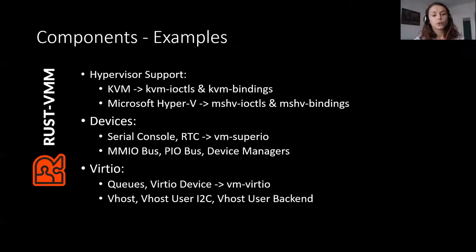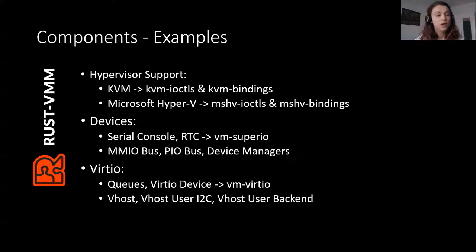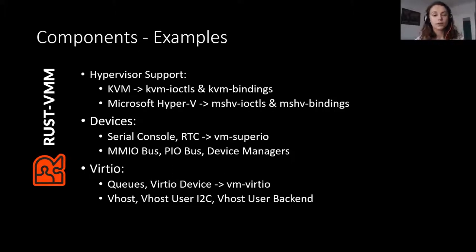To give you a few examples of components we have in RustVMM: we offer hypervisor support through KVM IOCTLs and KVM Bindings crates, and recently added the Microsoft Hyper-V crates. We're also providing implementation of devices, with legacy devices implemented in VM SuperIO, and primitives for working with devices such as the MMIO bus, PCI bus, and device managers.